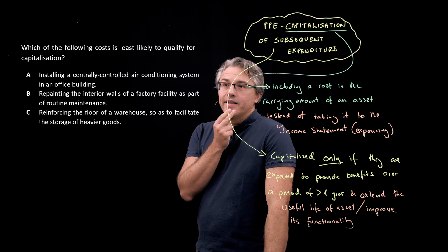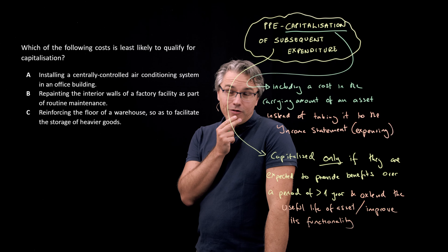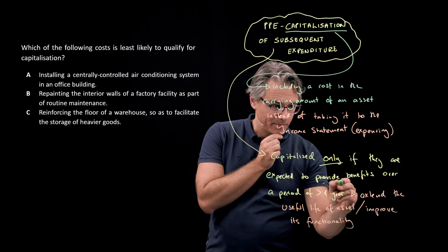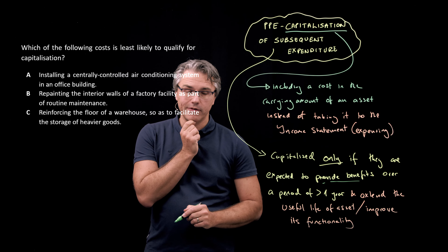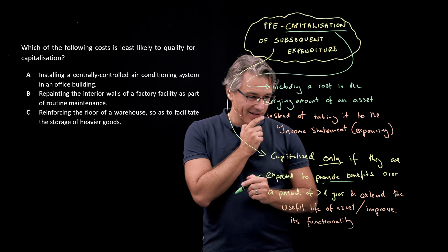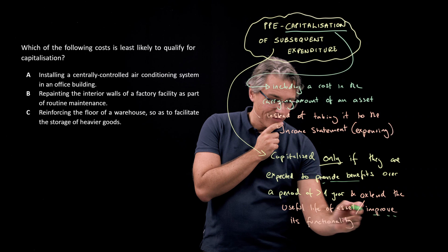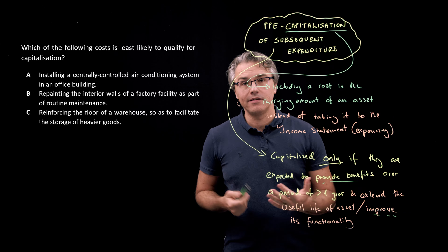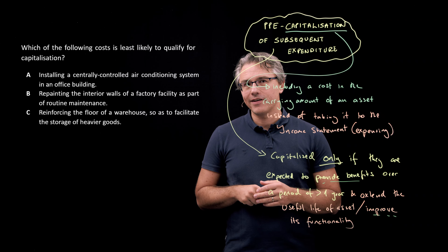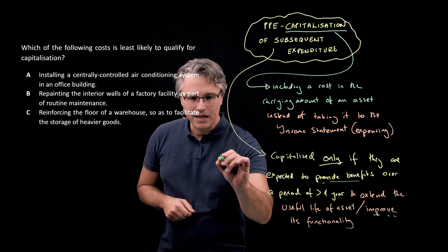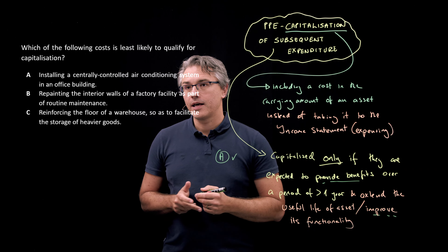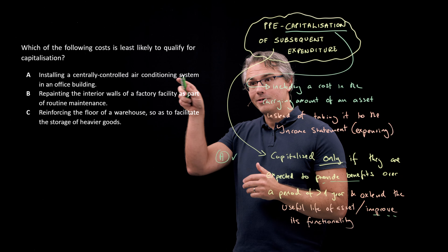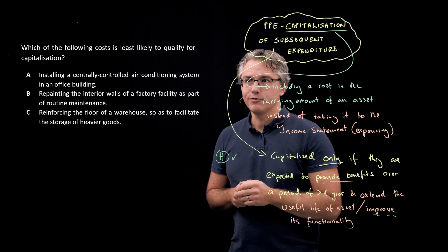Let's begin with A: Installing a centrally controlled air conditioning system in an office building. This will provide benefits over a period of more than one year, and it does substantially improve the functionality of the office building, so it does add realistic value. Therefore, A would definitely qualify for capitalization — which doesn't make it the answer to this question, because we're looking for the item least likely to qualify.